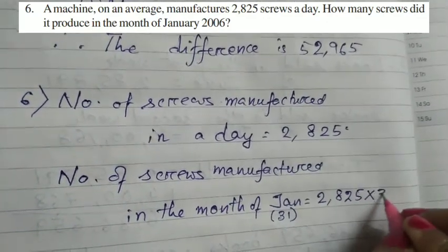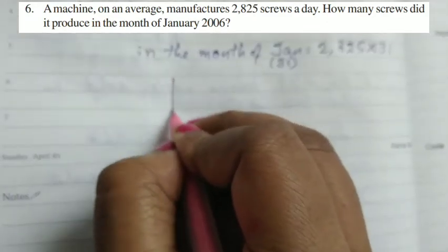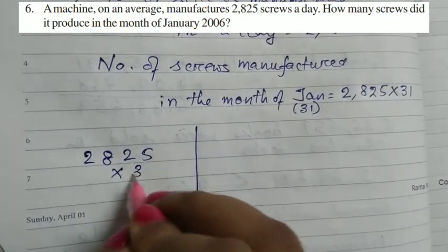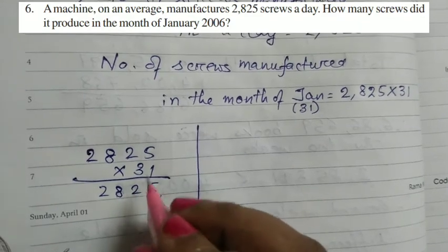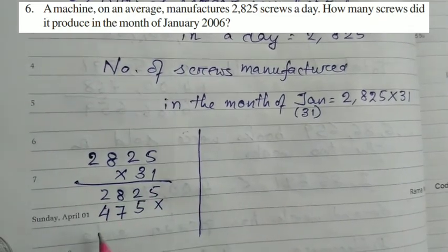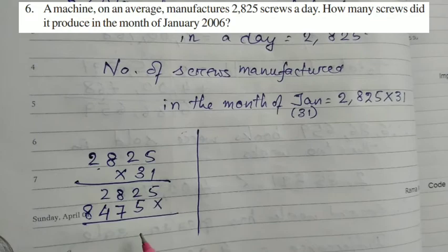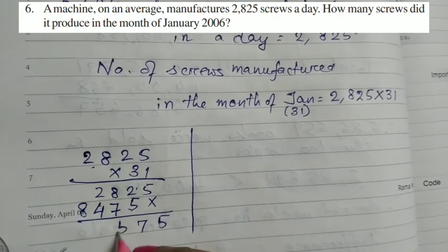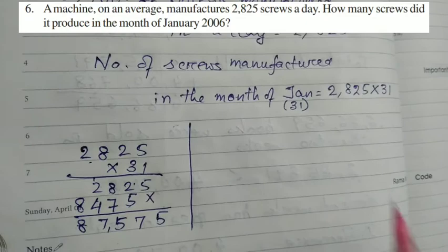And January has 31 days. So it will be 2,825 into 31. I will just multiply this. 2,825 into 31. It is 2,825, put a cross and 5, 3, so 15. 1, 3, so 7. 8, 3, so 24, carry 2. 6, 3, so 6 plus 2, 8. I will have it as 5, 5 plus 2, 7. 7 plus 8, 15, carry 1. 4, 5, 6 and 1, 7, 8. So 87,575.